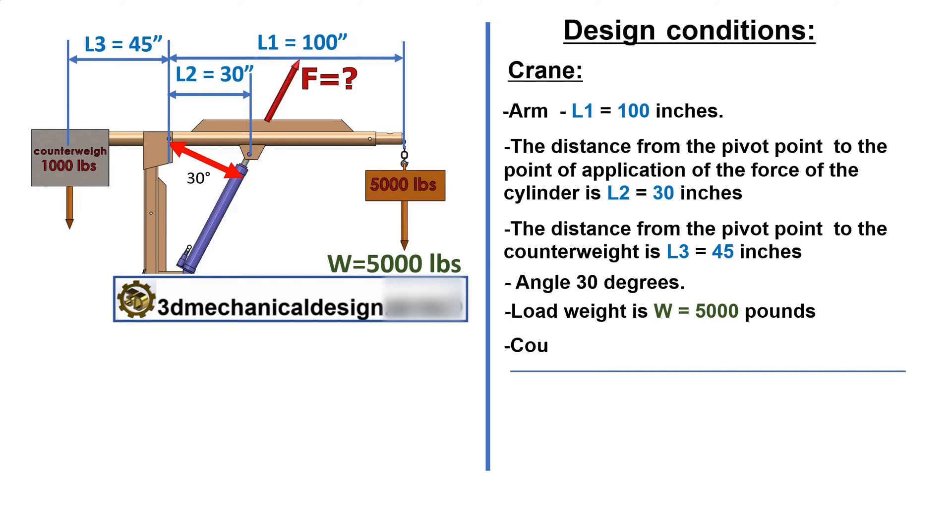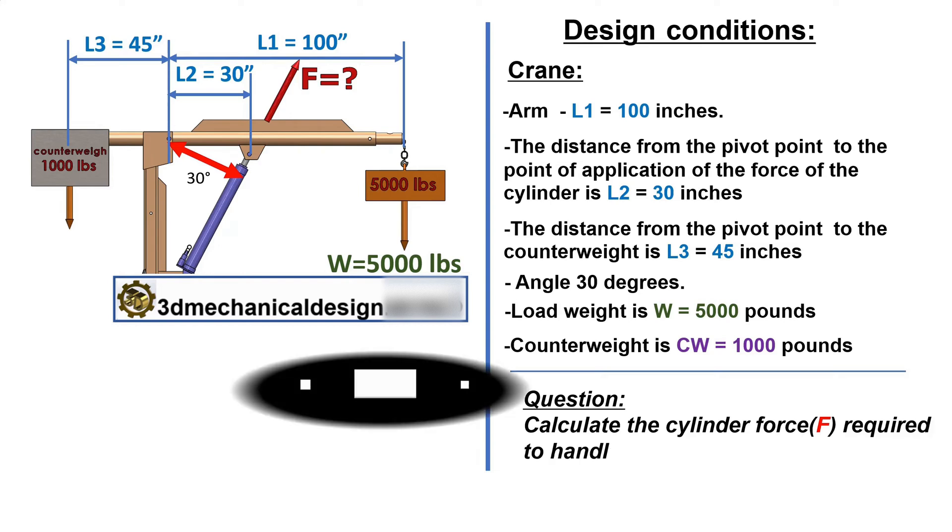Counterweight is CW equals 1,000 pounds. Question: Calculate the cylinder force F required to handle 5,000 pounds when the beam is in the position shown.